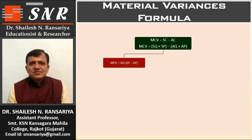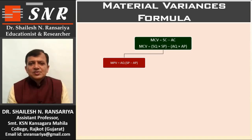For Material Price Variance: MPV = AQ × (SP − AP). We always subtract actual price from standard price.